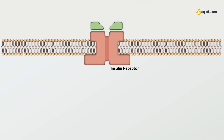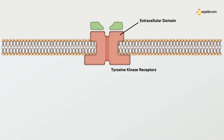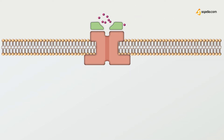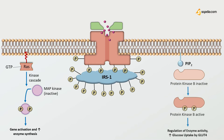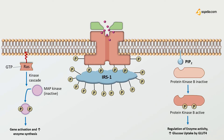Insulin receptors are tyrosine kinase receptors present in the cell membrane. They are integral membrane proteins with an extracellular and intracellular domain. Domains positioned outside the cell bind insulin and activate the tyrosine kinase catalytic domain located within the cell.